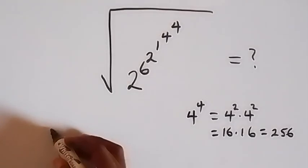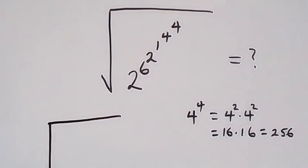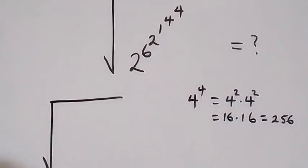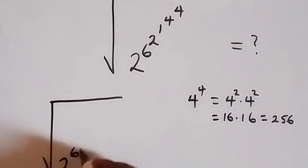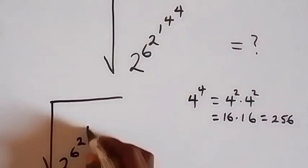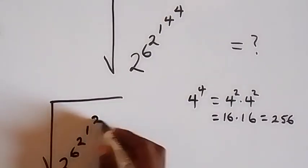And from here, what we have can now be written as square root of 2 raised to power 6, then raised to power 2, raised to power 1, which is raised to power 256.